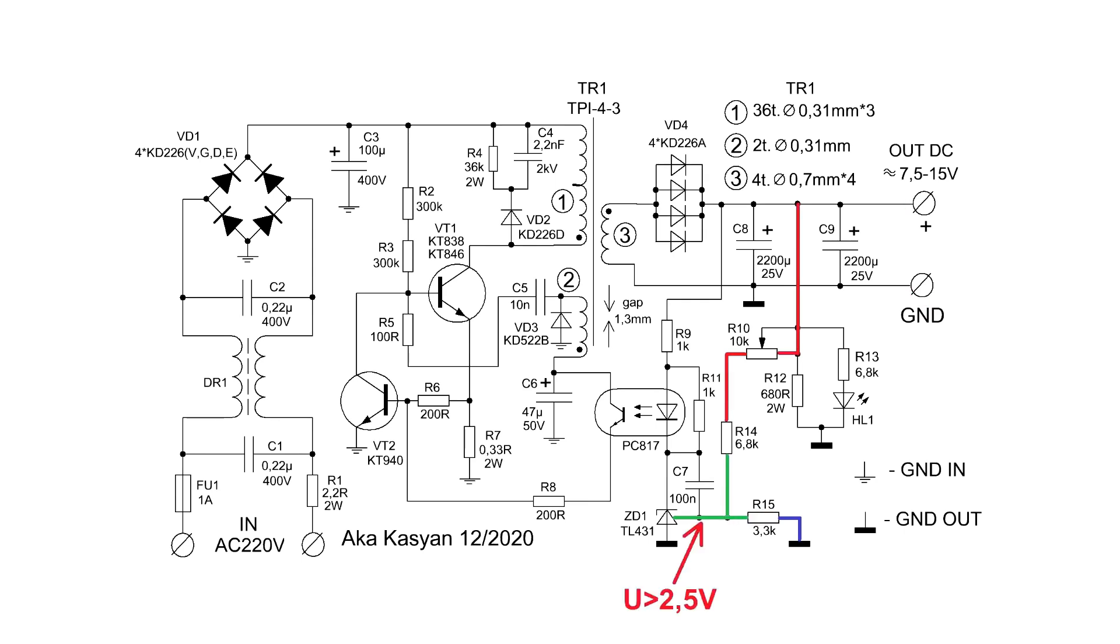If the voltage is above this threshold, the chip will activate, the power through the chip and the limiting resistor will go to the optocoupler's LED. It will light up, activate, and the optocoupler's transistor will apply a driving voltage to the low-power transistor in the inverter circuit. In turn, it will open, reducing the signal at the base of the power transistor, and the latter will begin to close.